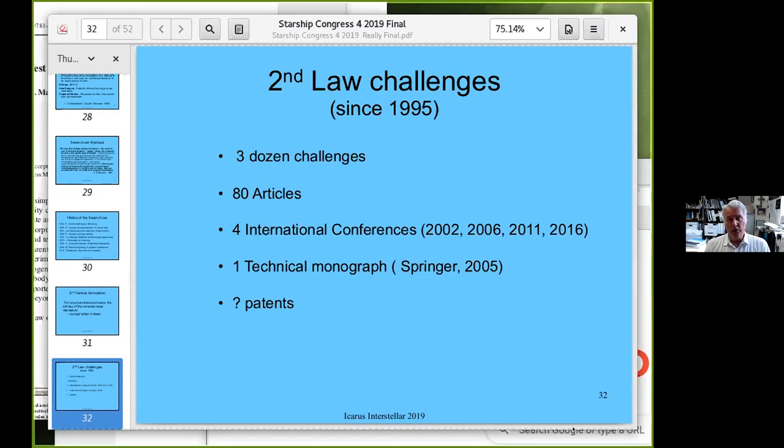When it comes to second law challenges, we're in a golden age right now. Since 1995, there have been about four dozen challenges entered into the refereed scientific literature. More than 80 articles have been published. There have been four international conferences held at the University of San Diego starting in 2002, with conference proceedings from the American Institute of Physics, the technical monograph by Capek and me, and an untold number of patents. It's unclear how many patents deal with the second law - these are crypto patents which actually deal with second law violators but are not phrased that way because they probably wouldn't have gotten through otherwise.